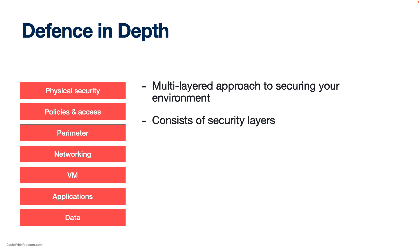These security layers include physical security at the top, policies and access, perimeter security, network security, VM or compute security, applications, and finally data security. The idea behind defense in depth is that if one layer fails, another layer can still protect the resource, reducing the risk of a successful attack.